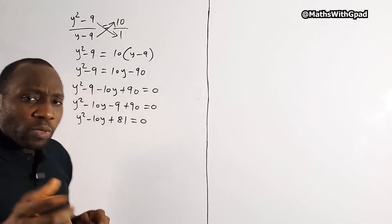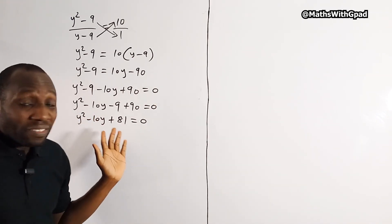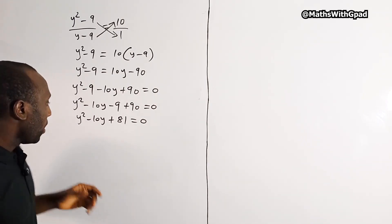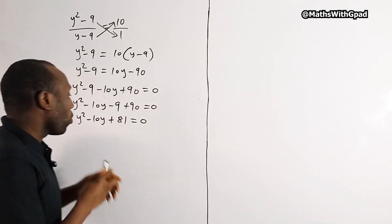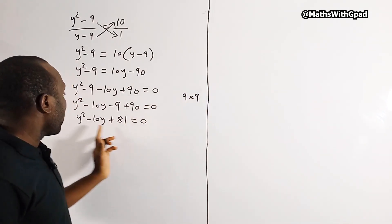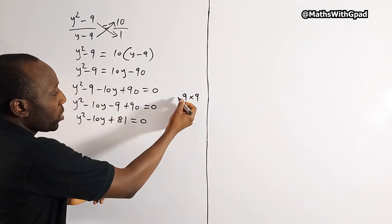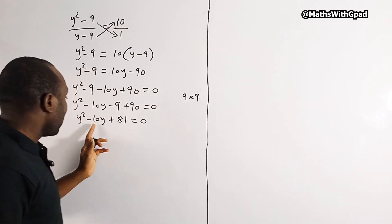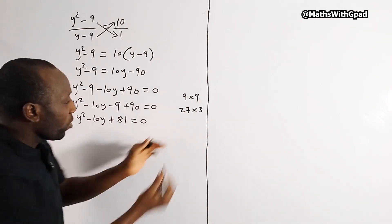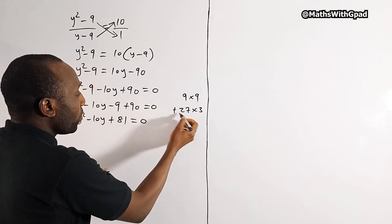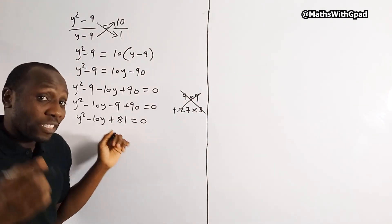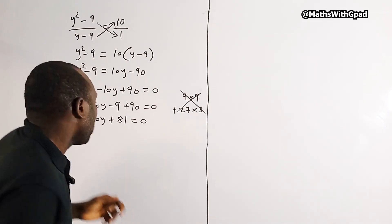Now we want to see if we can factorize this quadratic equation. Let's check: two factors of 81 — 9 times 9 is 81, but 9 plus 9 gives 18, not 10, and 9 minus 9 gives 0, not negative 10. Another factor pair: 27 times 3 is 81, but 27 and 3 don't add to negative 10 either. So this cannot be factorized — we need to use the quadratic formula.